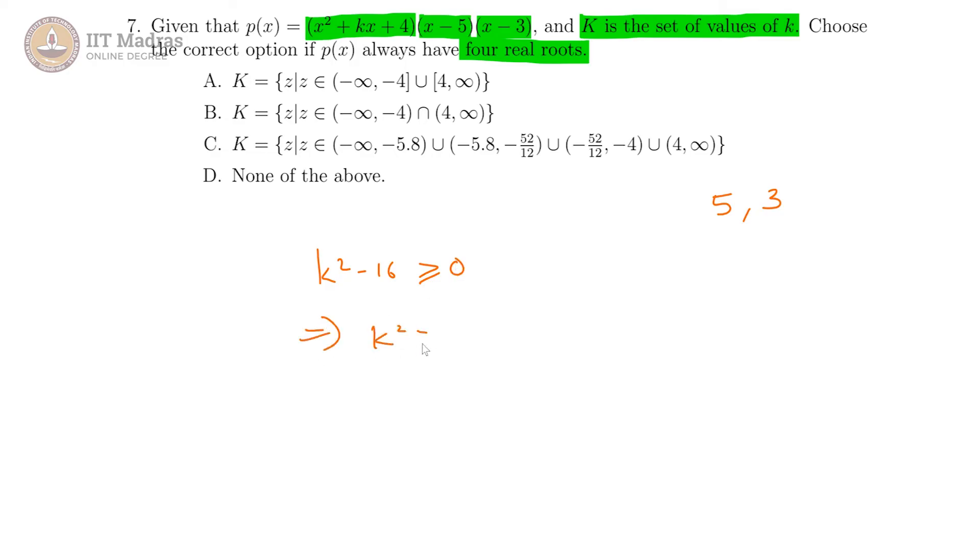That would indicate k square is greater than or equal to 16. Thus, the magnitude of k is greater than or equal to 4. If it is equal to 4, you get a repeated root, you get the same root twice.